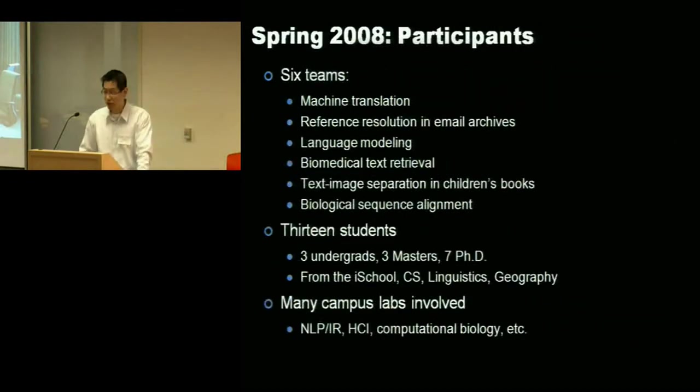So there were six teams in the spring 2008 iteration. These are the projects they worked on. It was a relatively small scale project, 13 students, seven PhDs, three undergrads, three masters. And they came from many departments on campus. So from the information school, my home department, computer science, linguistics, and even geography. We had a student that showed up from geography department wanting to participate. And it involved many campus labs. So of course, the labs on campus working on natural language processing, information retrieval, human computer interaction, computational biology, et cetera.